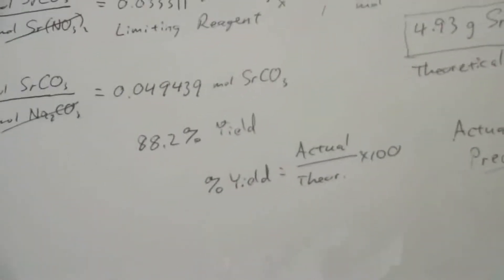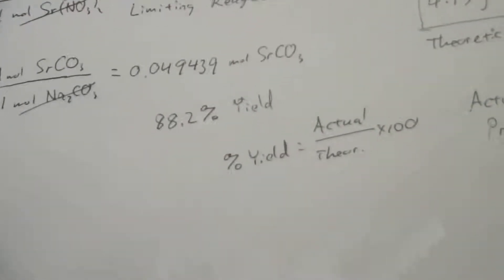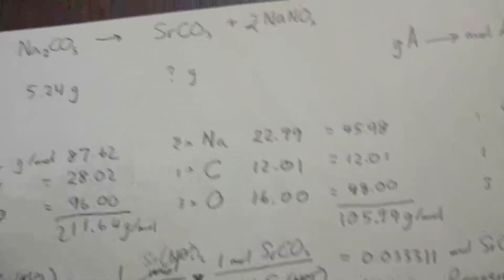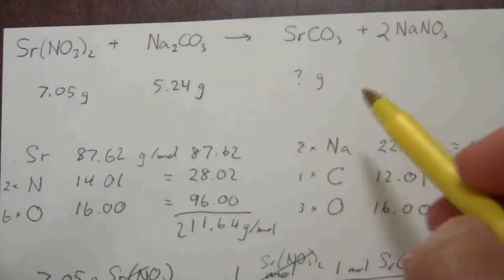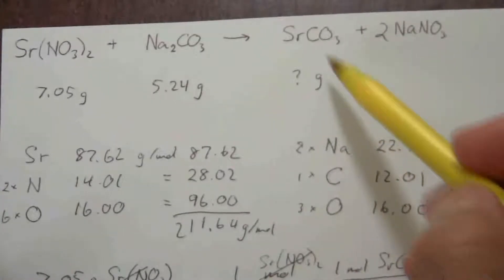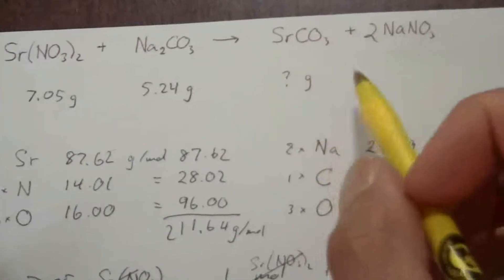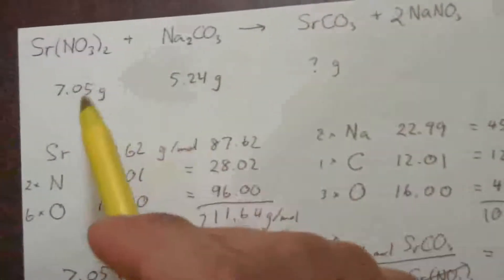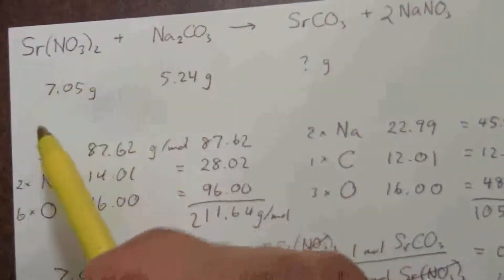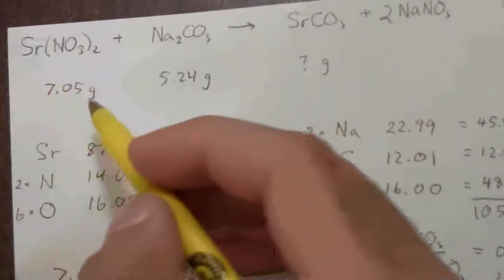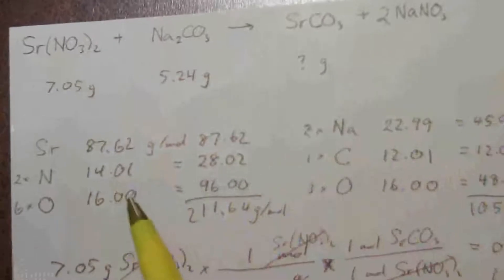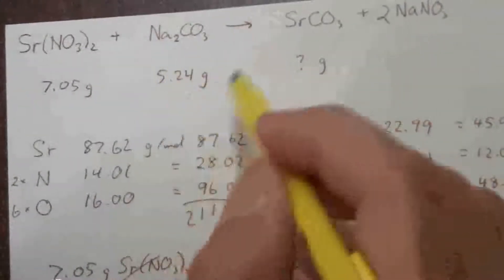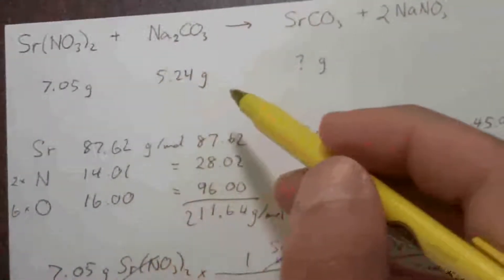Now, let me take this problem one step further and say, all right, now that we know how much of the strontium carbonate would be produced, and that's from the limiting reagent, which is actually our strontium nitrate, when this strontium nitrate is used up, since it's a limiting reagent, it's going to be all used up, and we're going to have some of this sodium carbonate left over.